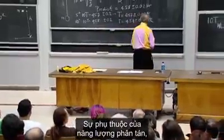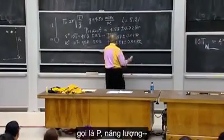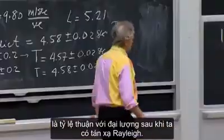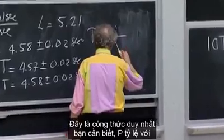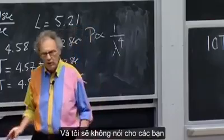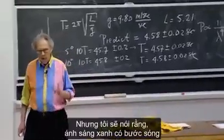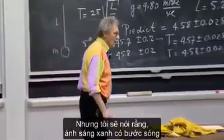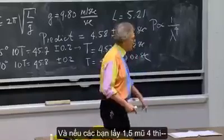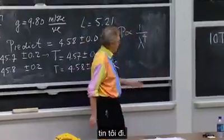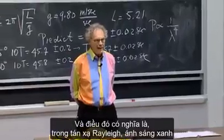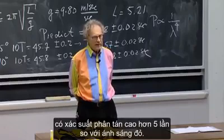The dependence of the power of scattering — I'll call that P — is proportional, when we have Rayleigh scattering, to one over lambda to the fourth, where lambda is the wavelength of light. Blue light has a wavelength which is about 1.5 times lower than red light. And so if you take 1.5 to the power of four, you get five. That means in Rayleigh scattering, blue light has a five times higher probability to scatter than red light.